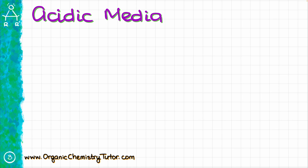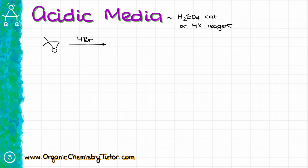I'm going to start by looking at the epoxide opening in acidic media. In acidic conditions, we'll have strong acids like H2SO4 present as a catalyst, or the reagent itself will be a strong acid, like HBr or HI. For instance, if I look at my example molecule — 2,2-dimethyloxirane — and treat that with something like HBr, then I get the product in which the oxygen will be attached to the less substituted carbon of what used to be our epoxide ring, and the bromine will be connected to the more substituted carbon.